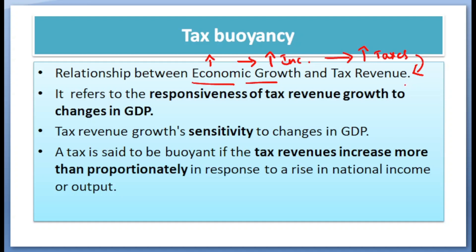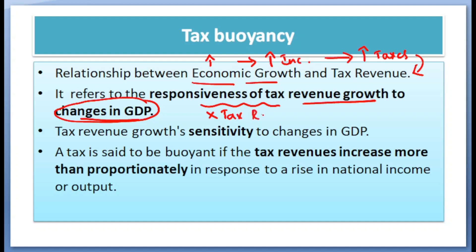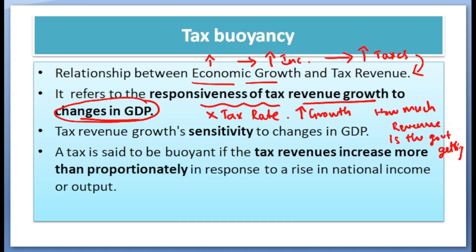Now, tax buoyancy measures the responsiveness of tax revenue growth to the changes in GDP — that is, to changes in economic growth — without changing the tax rate. Only when there is an increase in growth in the economy, how much more revenue is the government getting? That is tax buoyancy. Without changing the tax rates, when the GDP is increasing, how much more revenue the government is getting — because of which taxes the government is getting more revenue — those taxes are said to be buoyant.